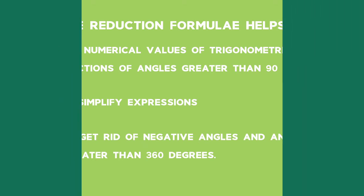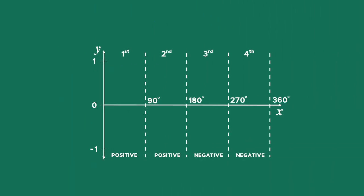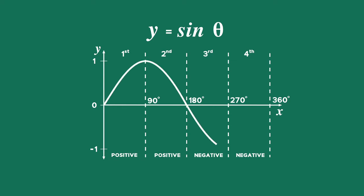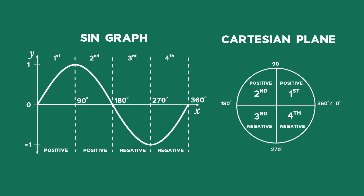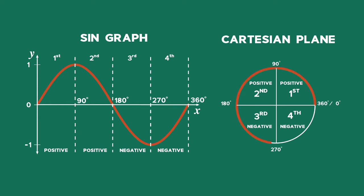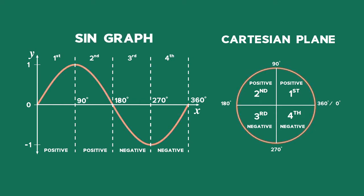For example, from working with functions we know that the graph of y equals sine of theta has a period of 360 degrees, therefore one complete wave of the sine graph is the same as one complete revolution on the Cartesian plane. We have a sine graph on the left, as you can see, and it's been divided into quadrants.